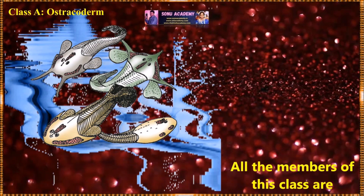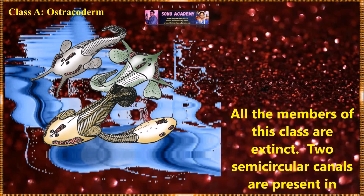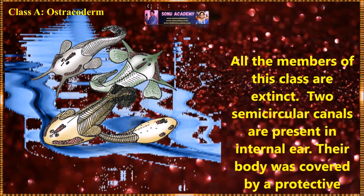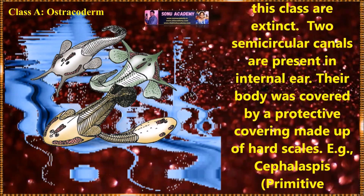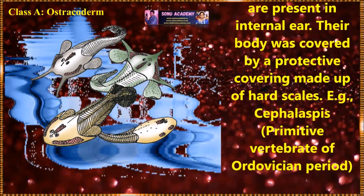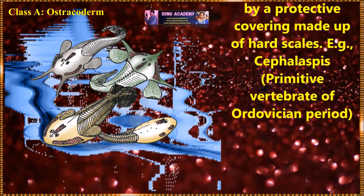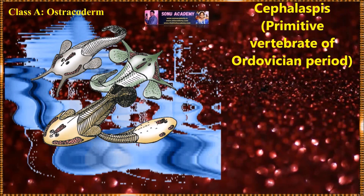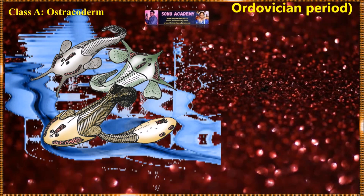Now let us discuss the class Osteocoderm. All the members of this class are extinct. Two semicircular canals are present in the internal ear. The body was covered by a protective covering made up of hard scales. Example: Cephalaspis, a primitive vertebrate of the Ordovician period.